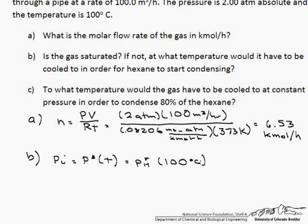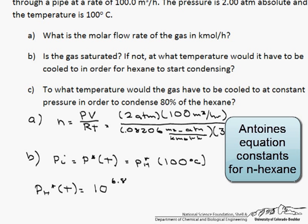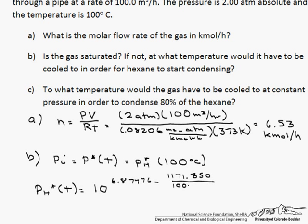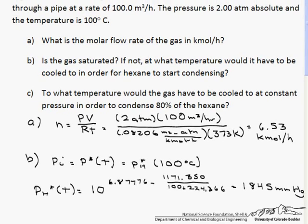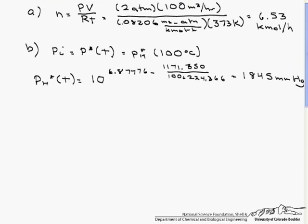So we use Antoine's equation to find our vapor pressure of hexane at a temperature of 100 degrees, and that is 10. We look up to find out what the constants A, B, and C are. So that is 10 to the 6.87776 minus 1171.350 divided by our temperature, which is 100, plus 224.366. So our vapor pressure at 100 degrees is 1845 mmHg.